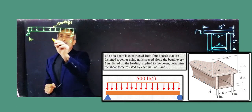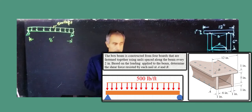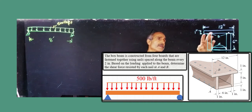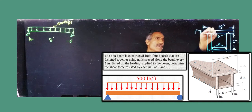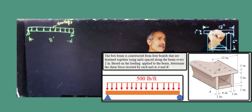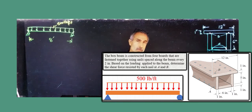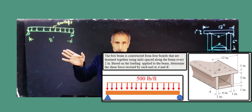This is a short beam, so shear can take over. We have this box beam with four pieces: one on the bottom, one on top — this is 12 inch by one inch — and it's nailed on the top, and the one on the bottom is nailed on the side. We want to find out what is the shear force on those two nails based on this type of loading.